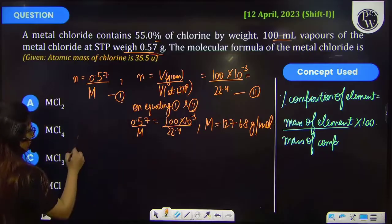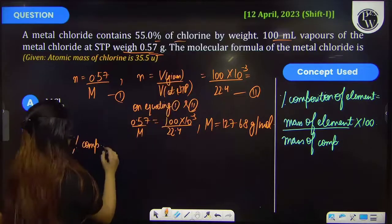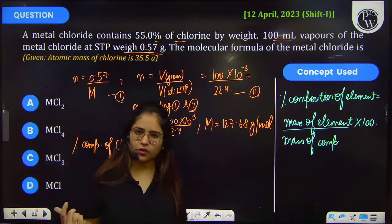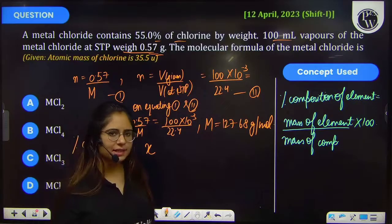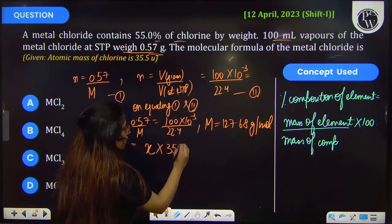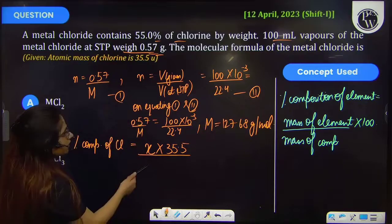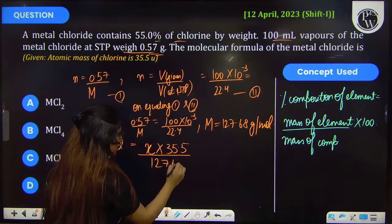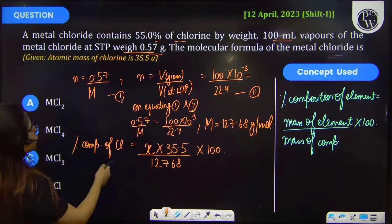So for this we have been given the percentage composition of chlorine. Now a chlorine atom is 35.5 gram per mole. But we don't know how many atoms are present, so that value is x. We will get to know what actually the molecular formula of the metal chloride is. And further the mass of the compound which is equal to 127.68.